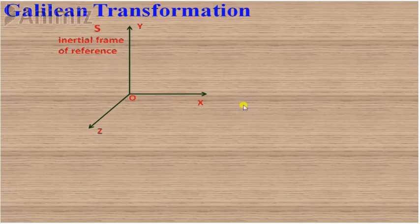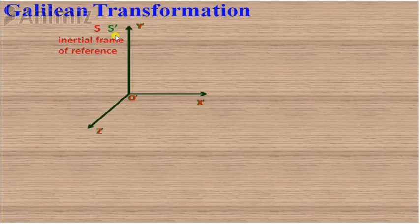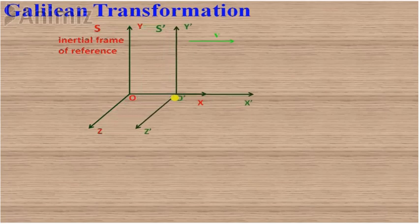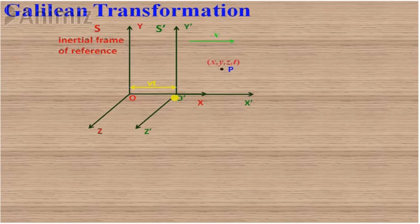Suppose S is an inertial frame of reference with coordinates x, y, z and time t, and another frame of reference S'. At time t equal to zero, both frames coincide with each other. S' is moving with velocity v with respect to S. At time t, S' has traveled distance vt. Suppose an event occurs at point P — in S frame its coordinates are x, y, z, t, and in S' frame they are x', y', z', t'.